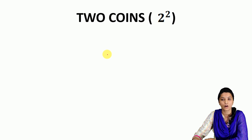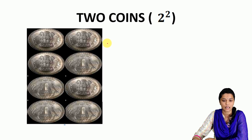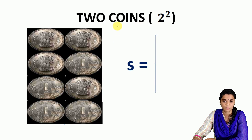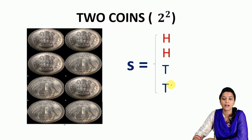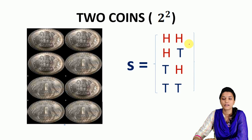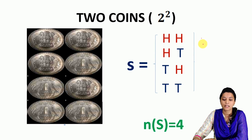When we toss 2 coins, we have 4 sample spaces. The outcomes are: head-head, head-tail, tail-head, tail-tail. So N(S) equals 4. Now for 3 coins, the number of sample spaces is 2 cubed, which equals 8. So N(S) equals 8.